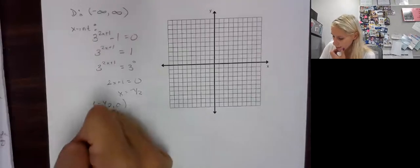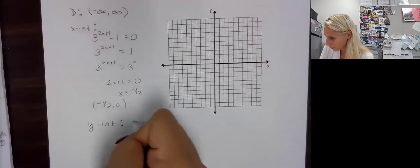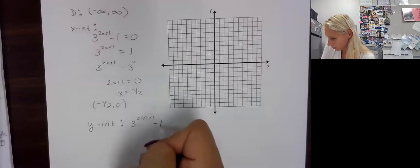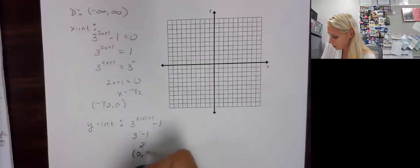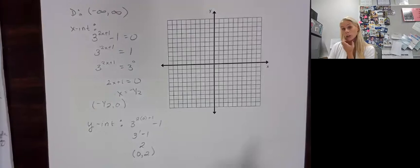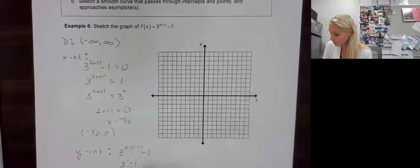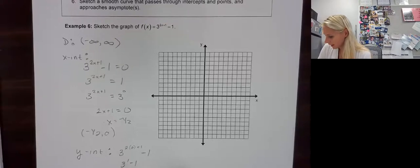Now we want the y-intercept. Y-intercept is when x is 0. So let's plug in 0 there. We get 3 to the 2 times 0 plus 1 minus 1. So 3 to the 1st minus 1. So what do we get? 2. So our y-intercept is at 0, 2. Alright. Let's think about transformations here because that will help us with our asymptote. First of all, the minus 1 at the very end makes it go down 1. Which makes our horizontal asymptote y equals negative 1.